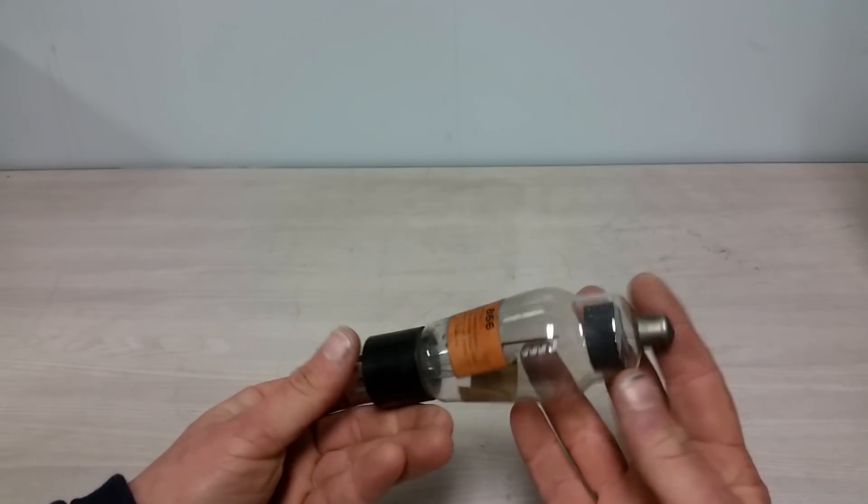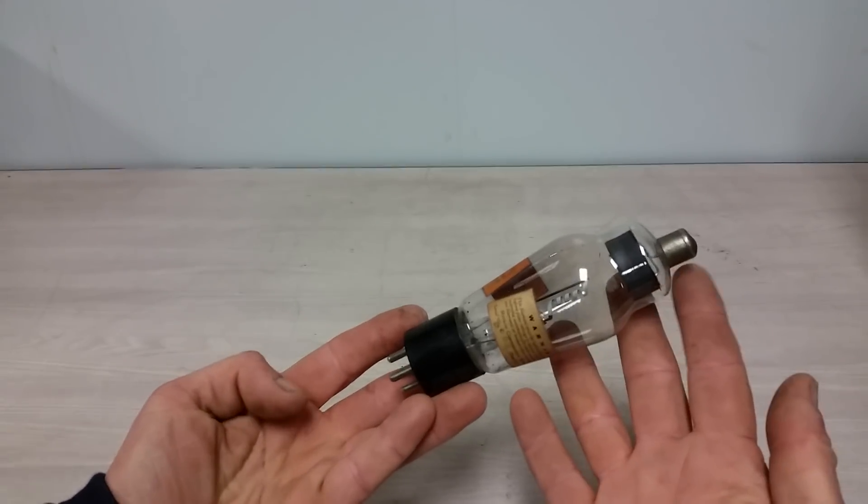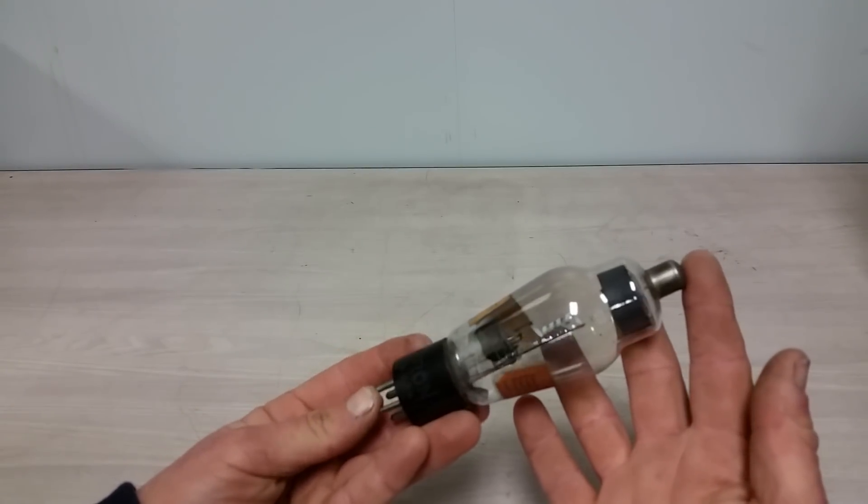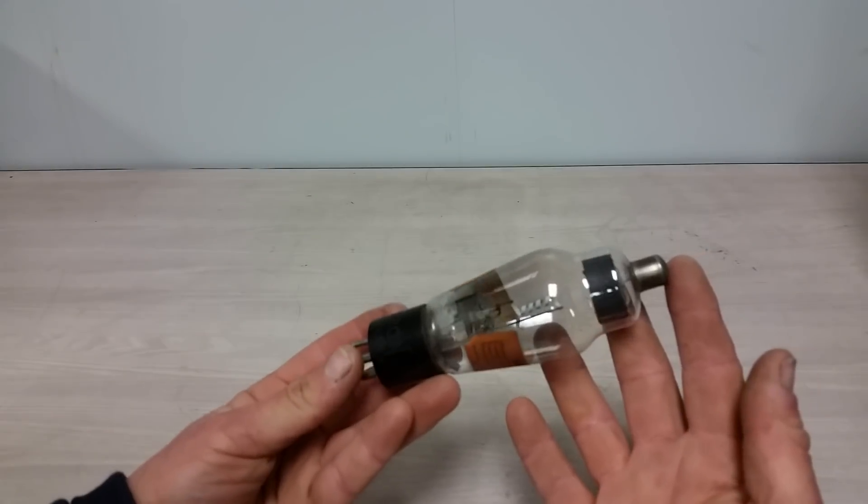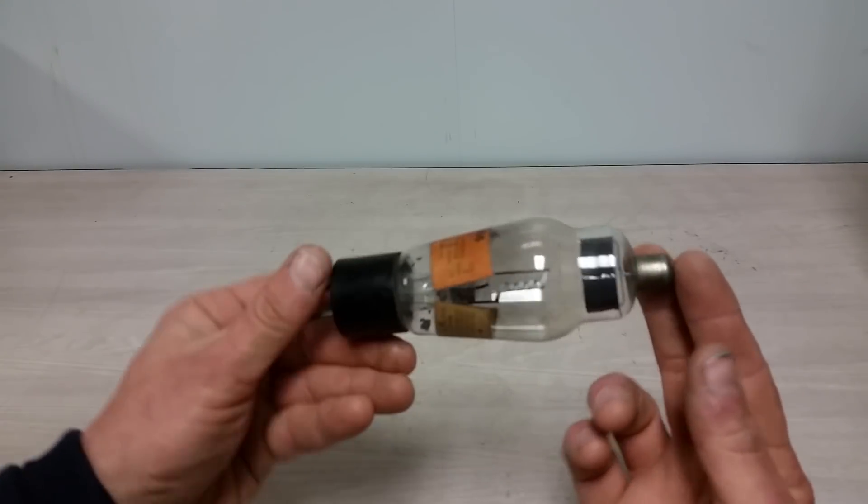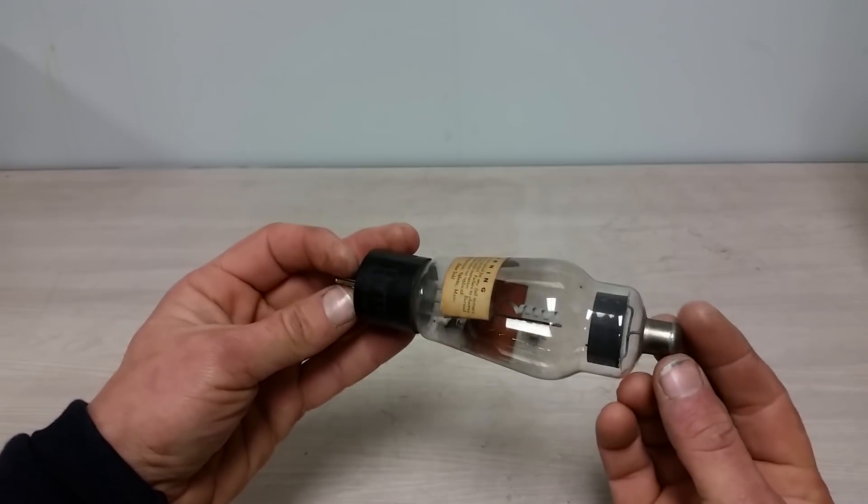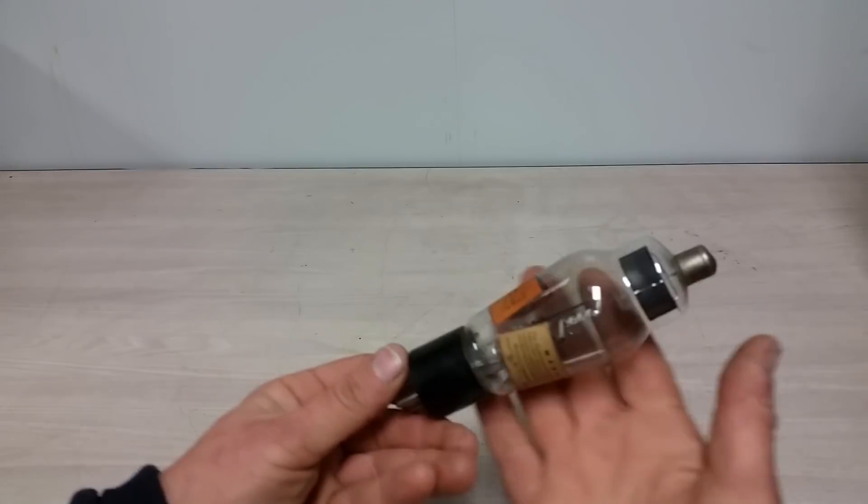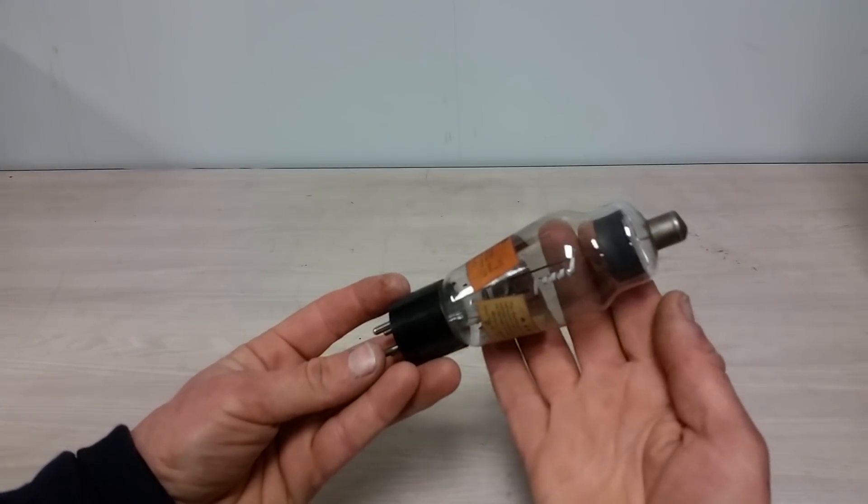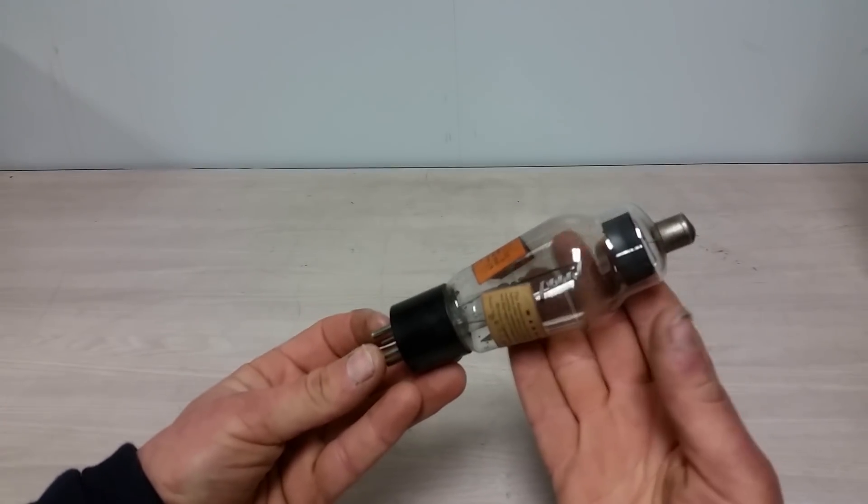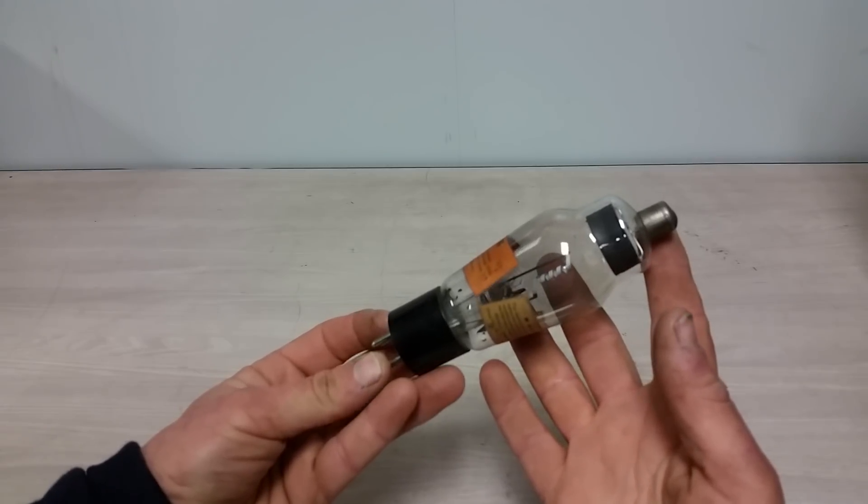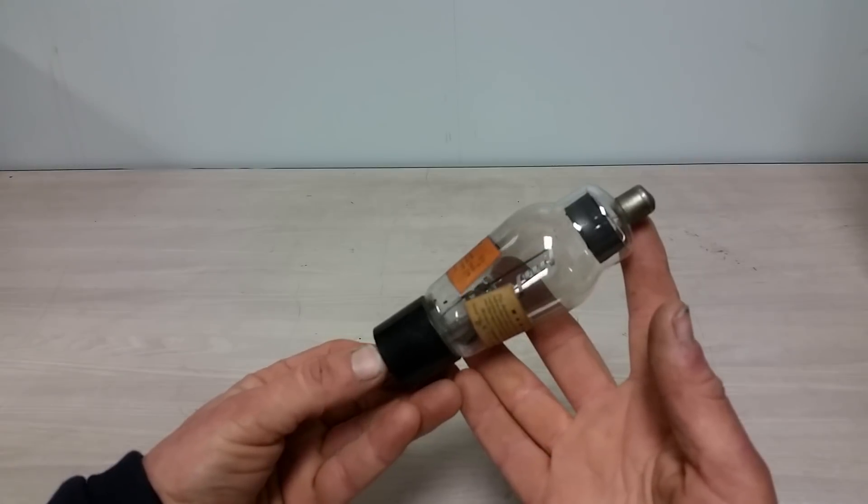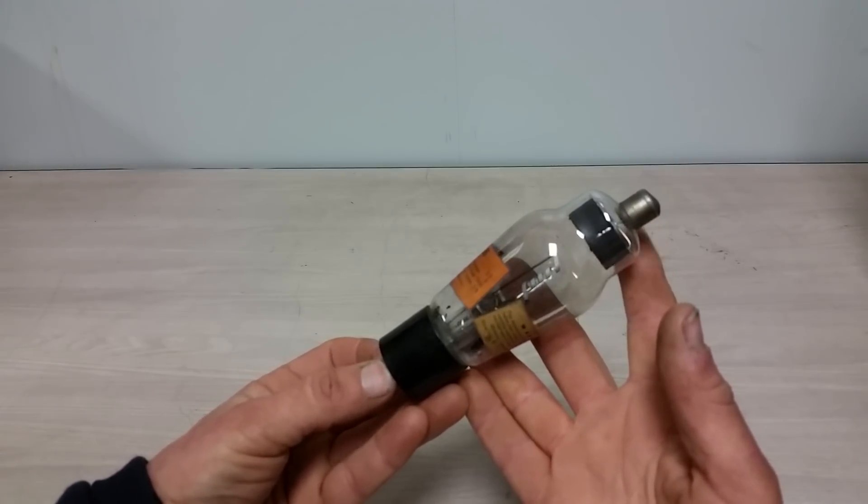Now, the 866 is a mercury vapor rectifier. It is a half-wave rectifier. And mercury vapor, because yes, there is a tiny, tiny little blob of mercury in here. And you can kind of see, it's probably amalgamated with a bunch of stuff. Oh, there you can see a little bit there. This one's got some hours on it, clearly. The idea being is you vaporize the mercury with the filament. And you can get an awful lot of current through the tube with a very low voltage drop.